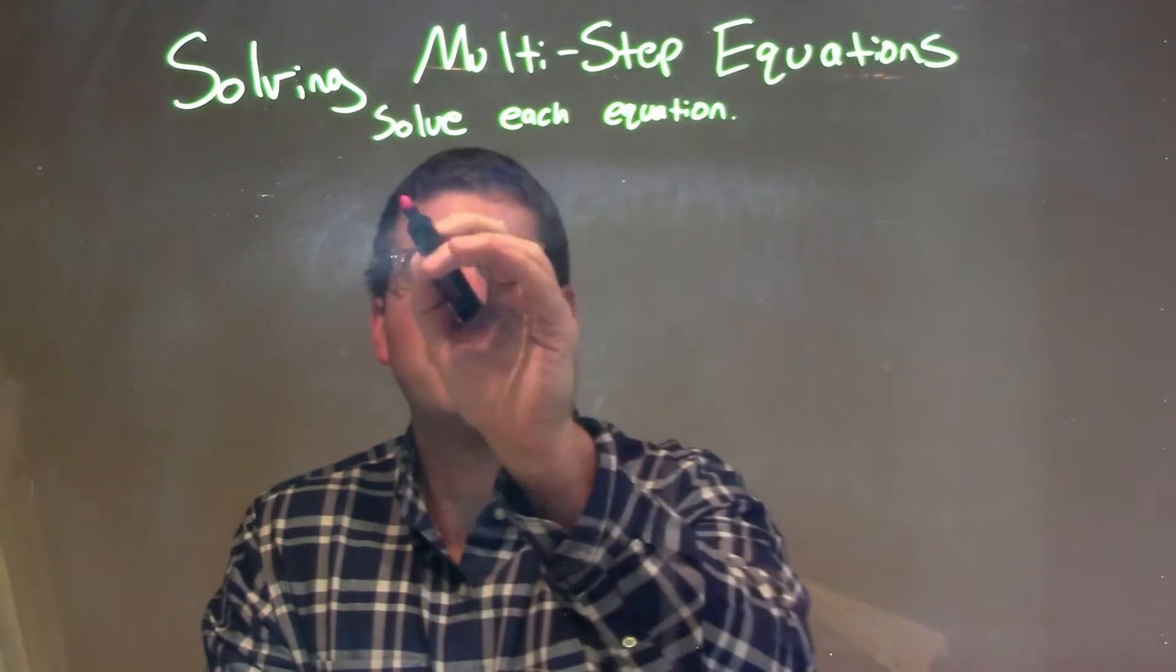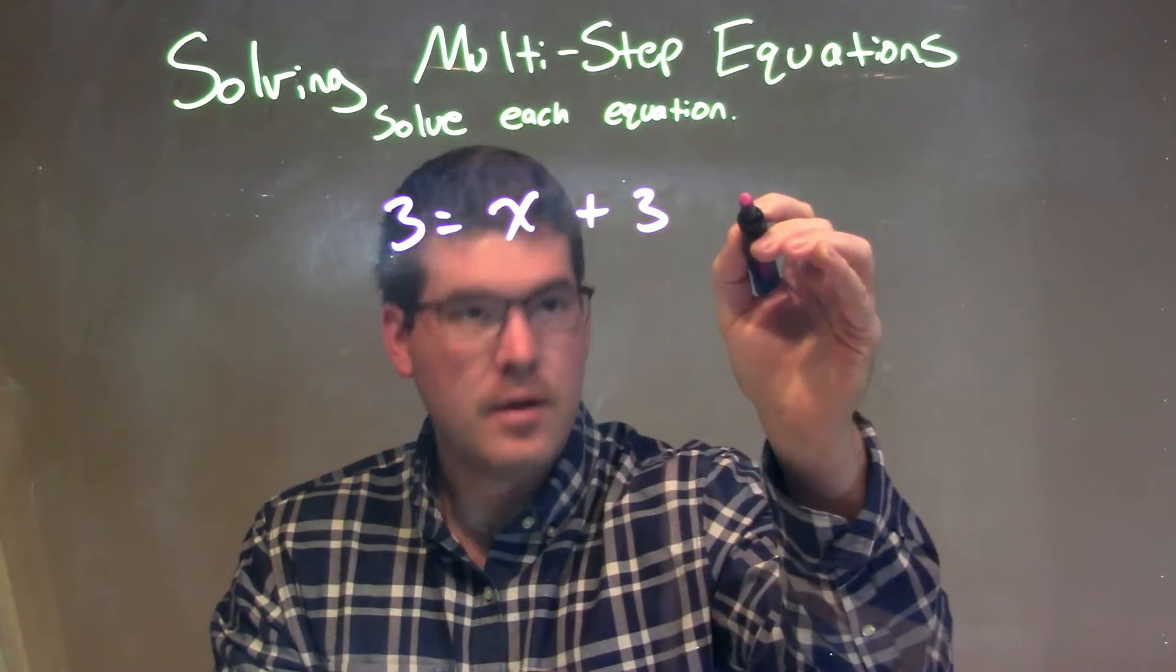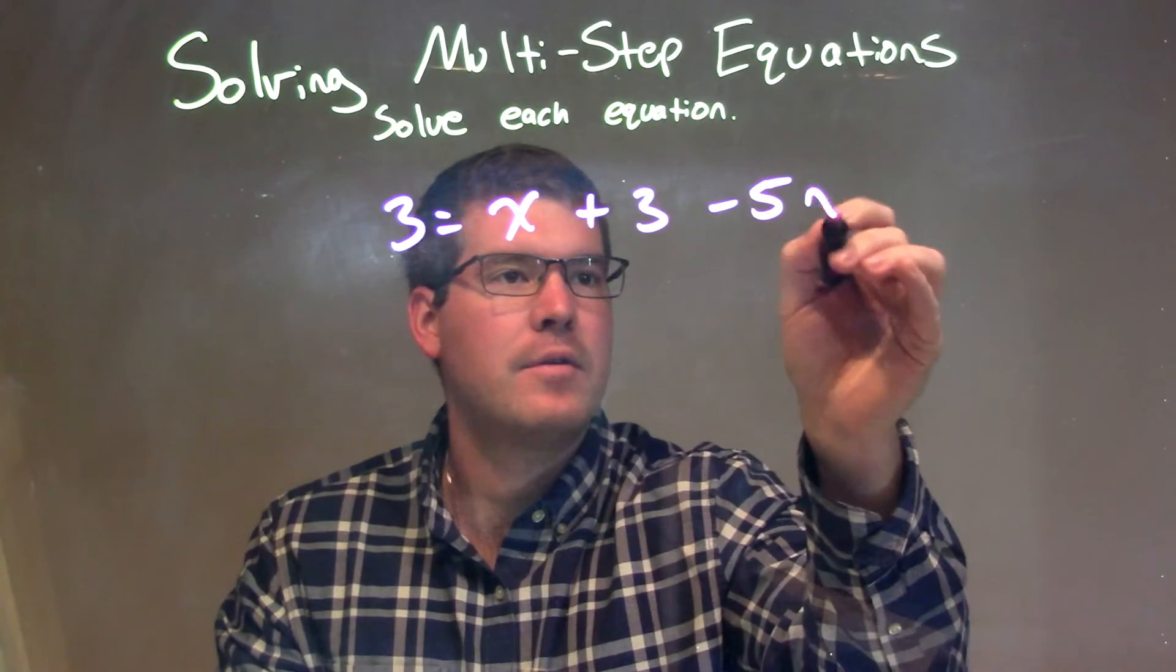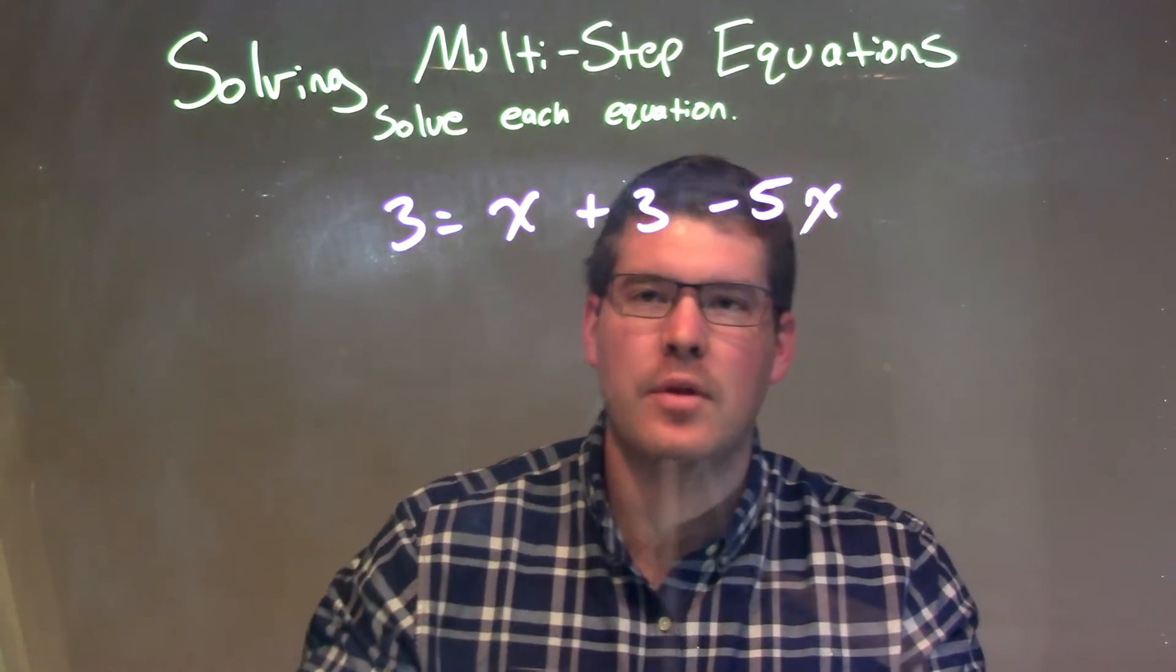So if I was given this equation: 3 equals x plus 3 minus 5x. What I want to do is get all my numbers to one side and all my variables to the other.